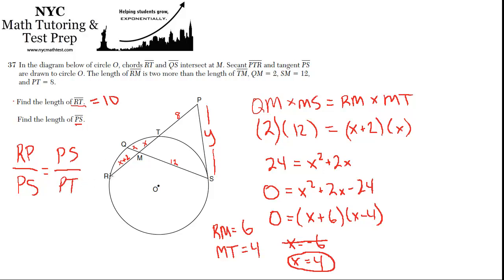So in this case, we know RP, we know TP, but we don't know PS. It's what we want. So that's what we've called Y. So RP is 8 plus the 10. So that's this whole thing. RP is 18, right?